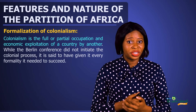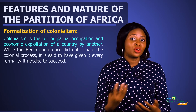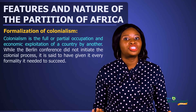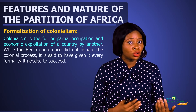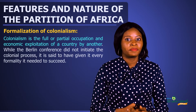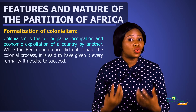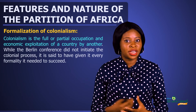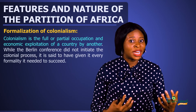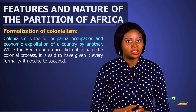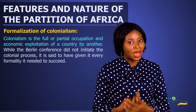The last feature is the formalization of colonialism. Colonialism can be defined as the partial or full occupation and economic exploitation of one country by another. It is important to know that the Berlin Conference did not initiate the colonial process of Africa — as we can see in the case of Algeria and Egypt, they were already colonized before the Berlin Conference. However, the Berlin Conference formalized the scramble for Africa.